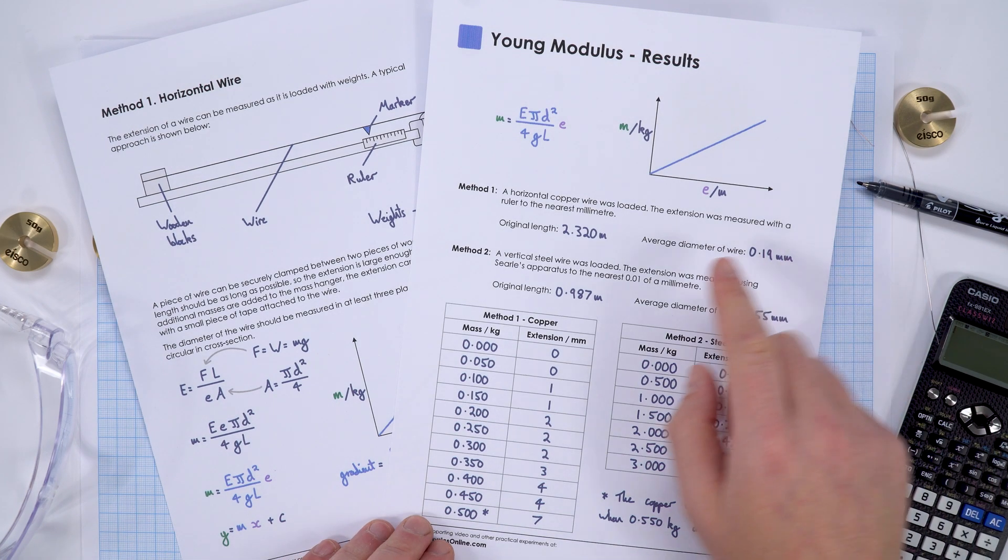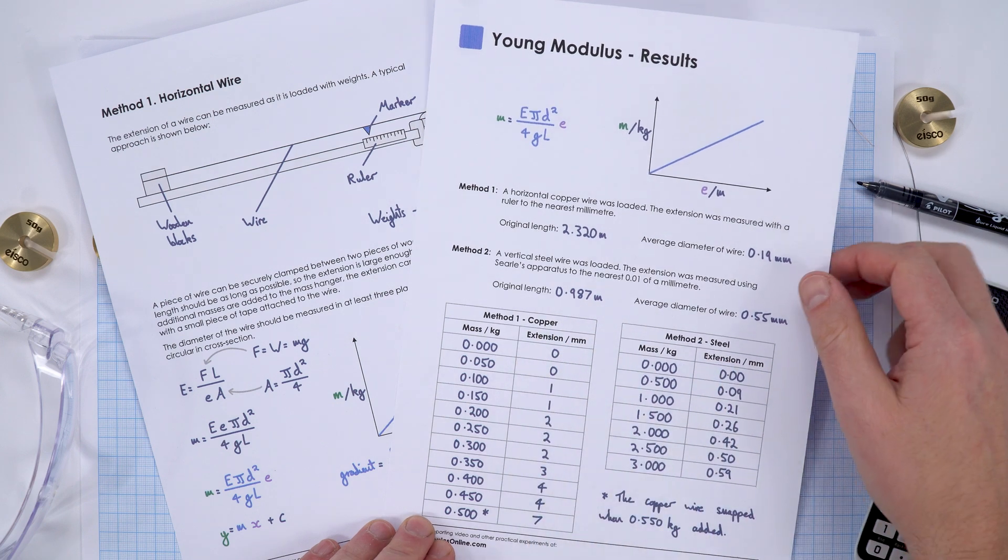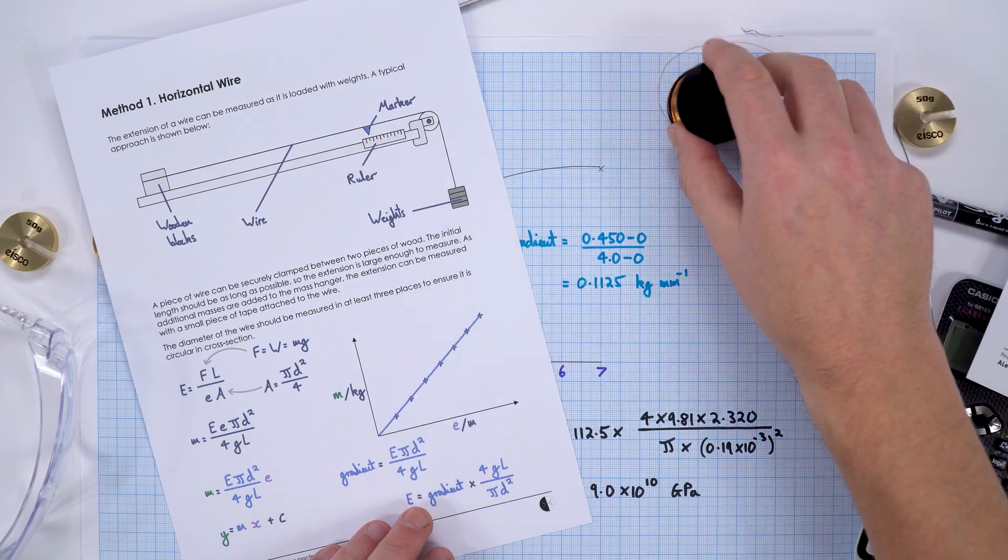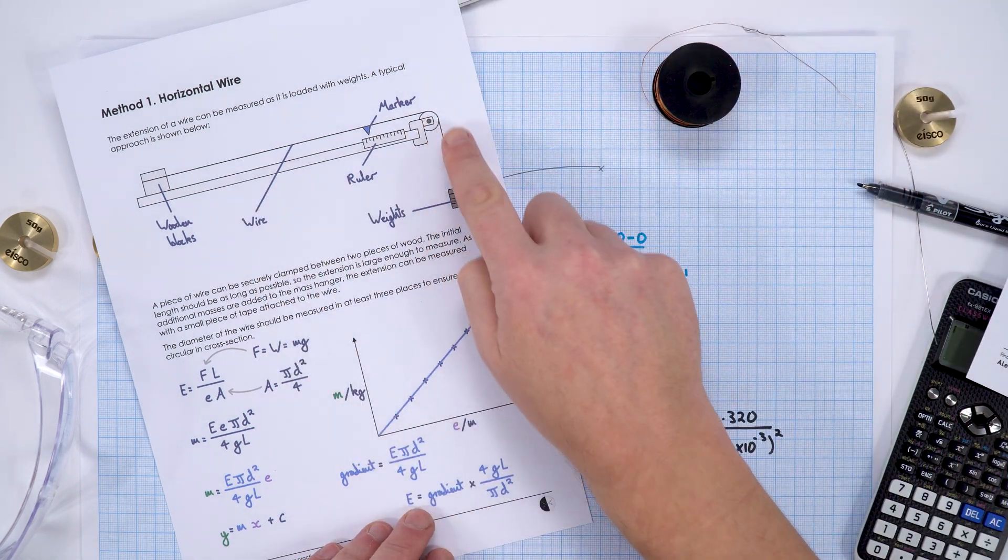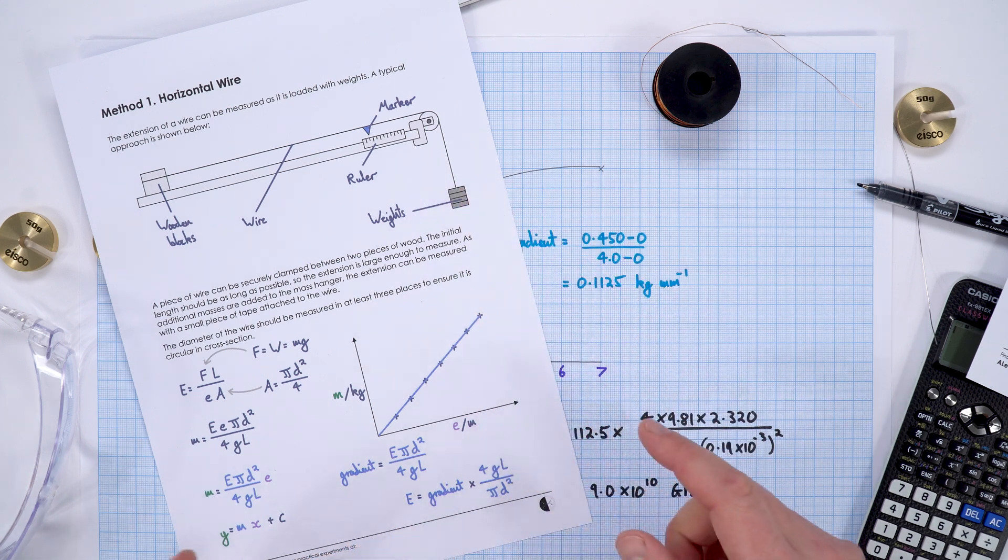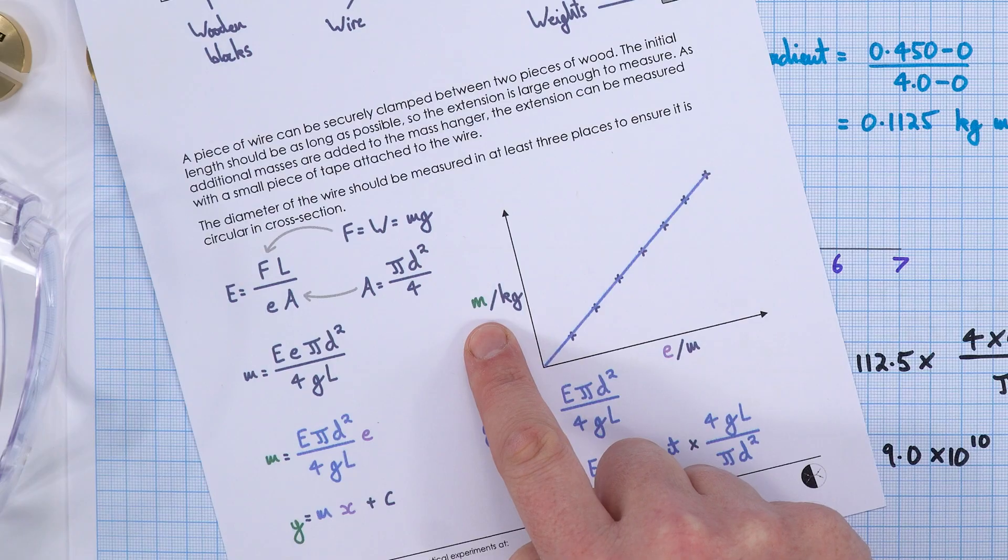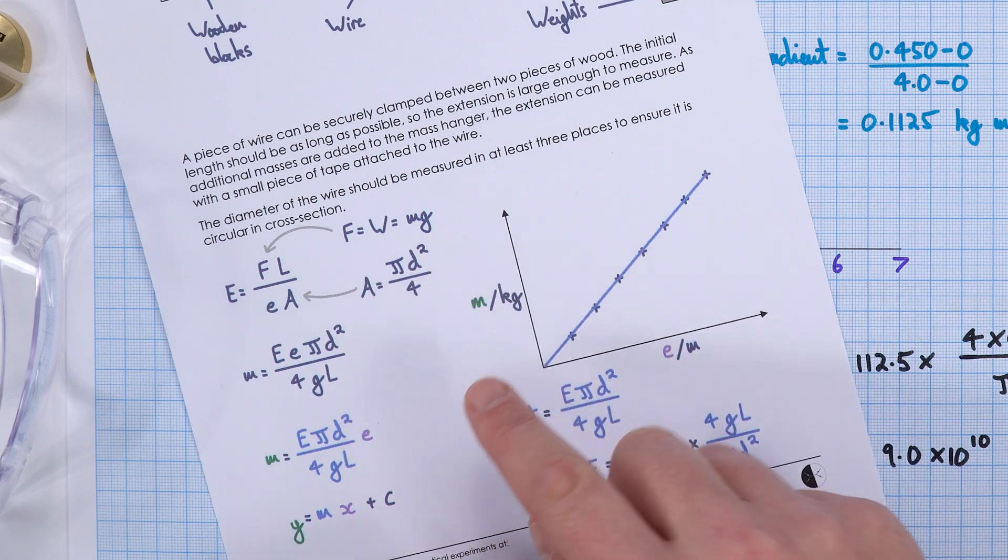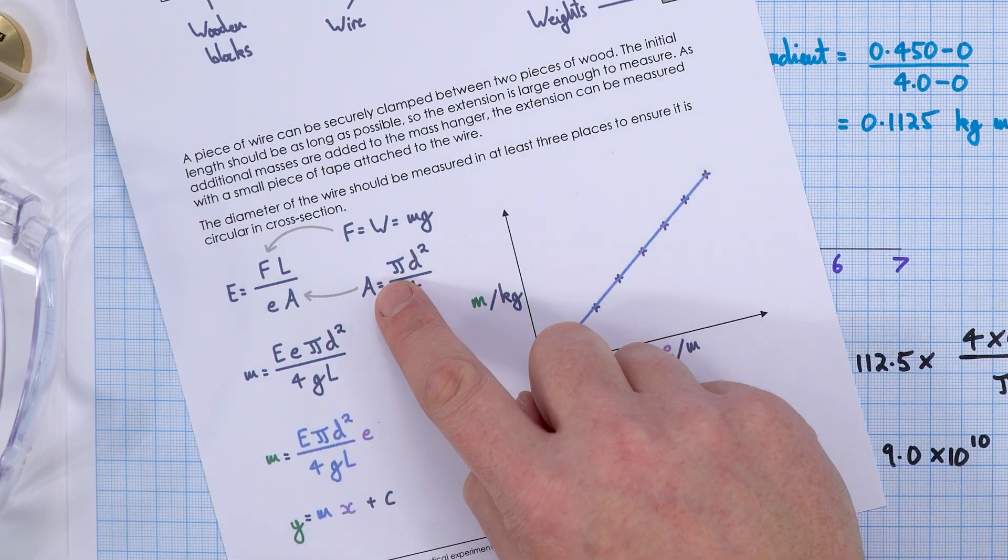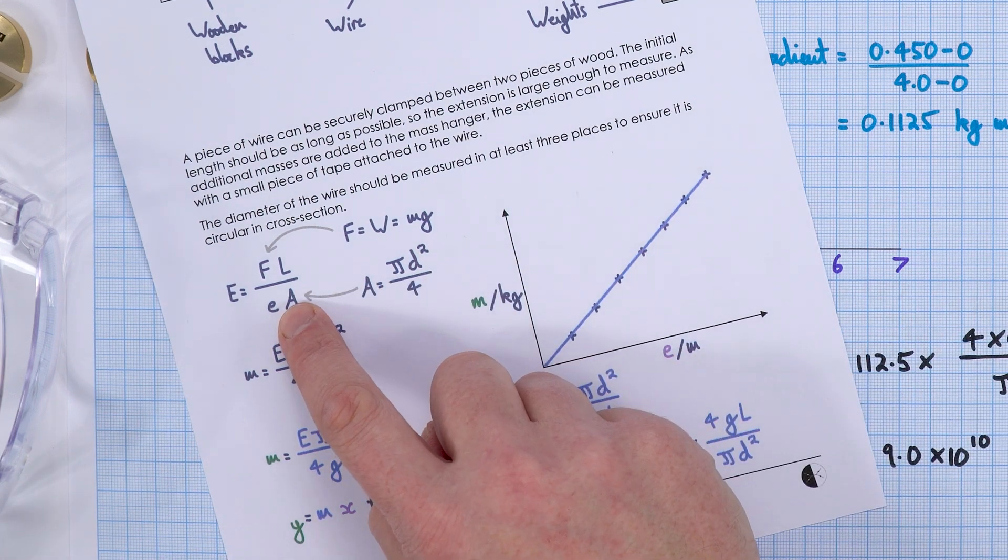Here are my results for looking at the Young modulus of both copper and steel. When we looked at the copper, this was done with a horizontal setup. I had the mass and the extension, and using this formula where I've put the area into this formula and also looked at the weight being equal to mg...